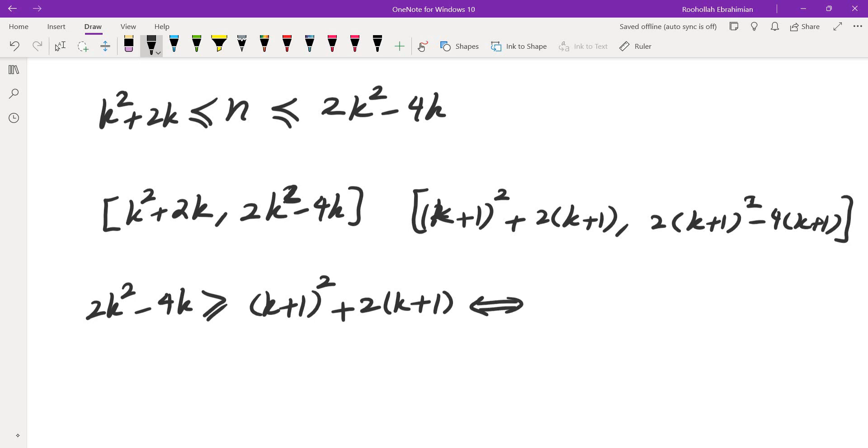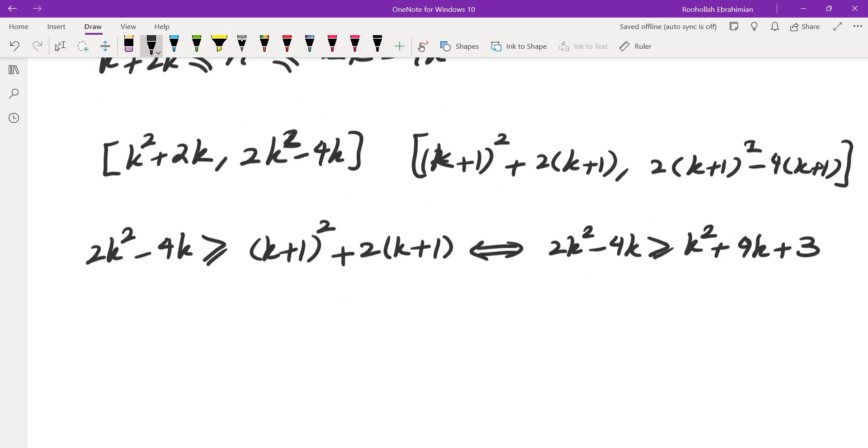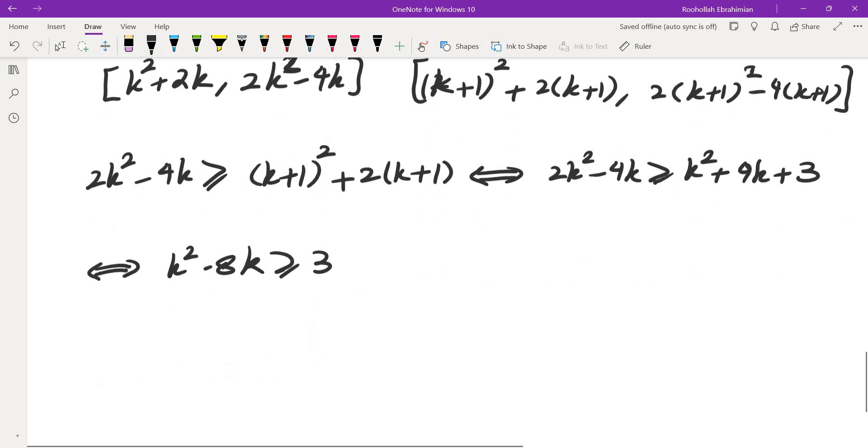Let's simplify this and see what we get. This is 2k squared minus 4k greater than or equal to k squared plus, we get 2k here, 2k here, we get 4k plus 3. And this is equivalent to k squared minus 8k being greater than or equal to 3. So now if you rewrite that as k times k minus 8, greater than or equal to 3, this holds if k is greater than or equal to 9.